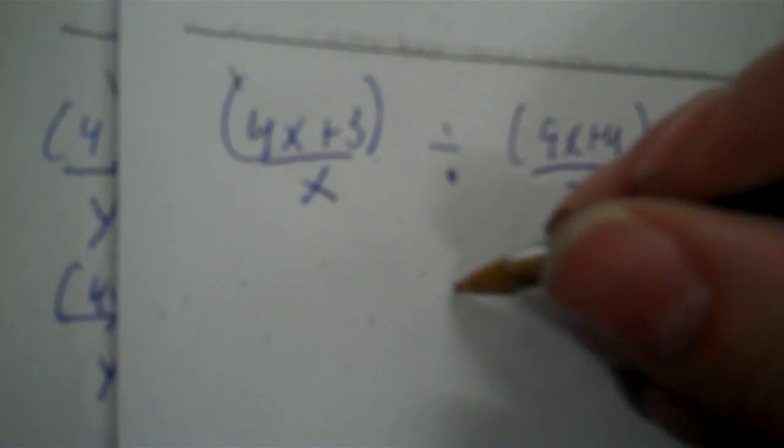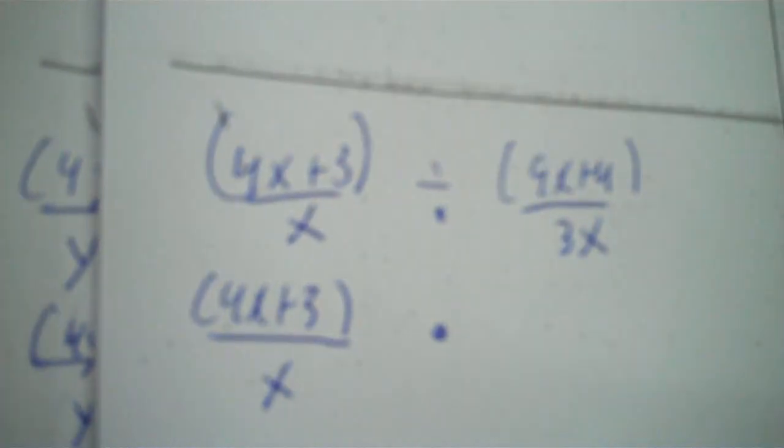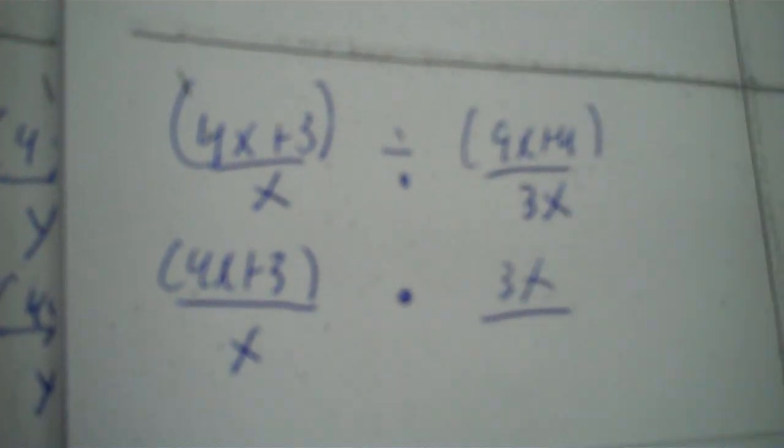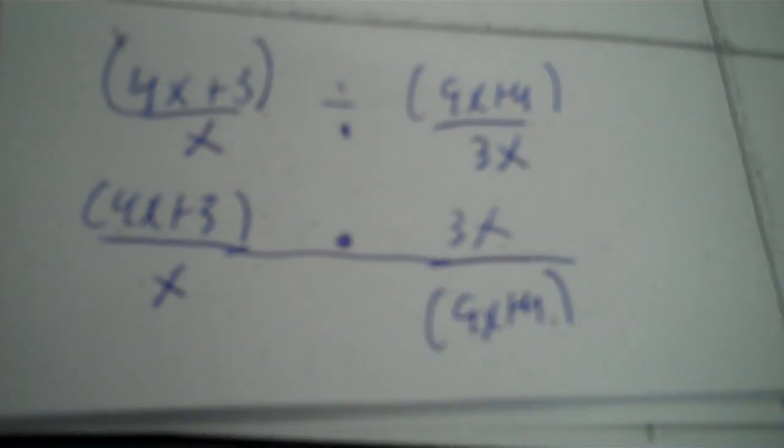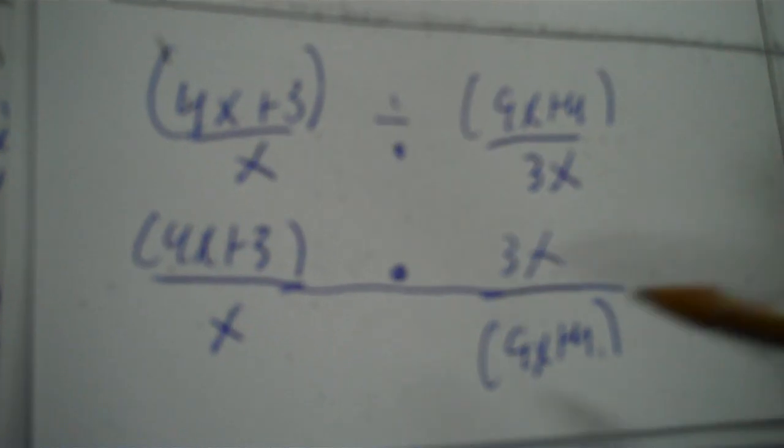Switch that to a multiplication. The first fraction stays exactly the same. The second one I need to reciprocate — put 3x on top and the quantity 9x plus 4 on the bottom. The parentheses are totally different — they're in your final answer. Non-parenthesized factors: you have 3x on top and x on the bottom. The 3 does nothing, but x over x is a wipeout.